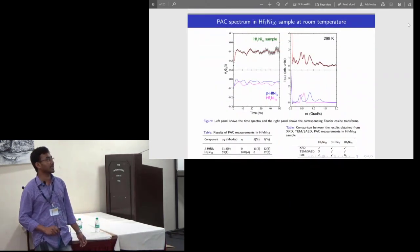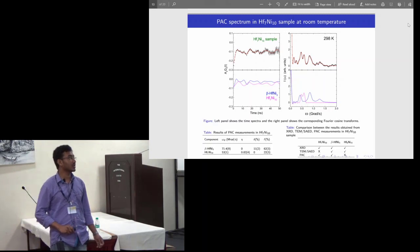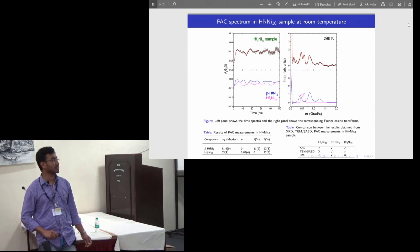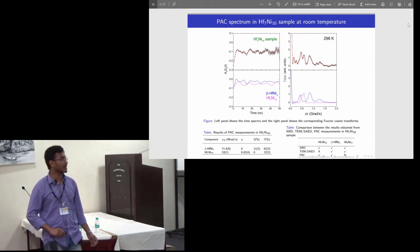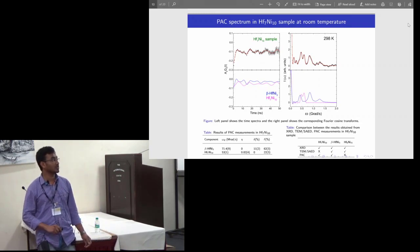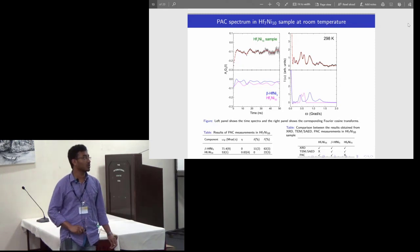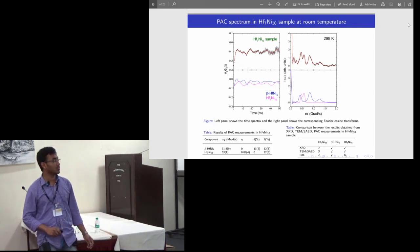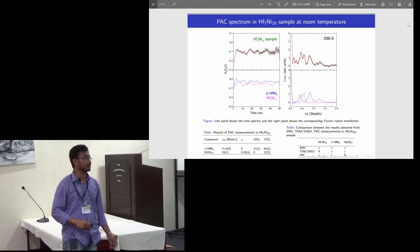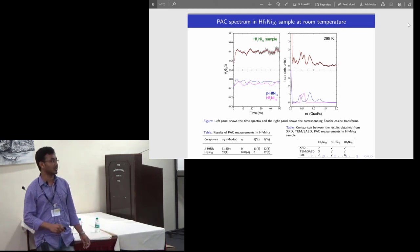This is the PAC spectrum of Hf7Ni10 at room temperature. Here we found beta-HfNi3 and Hf7Ni10. Beta-HfNi3 is found to be predominant in this sample at 62 percent and Hf7Ni10 was found to be a minor phase at 22 percent. I have shown the decomposition of these two phases, but we did not find any Hf8Ni21 phase probably due to large damping factor.